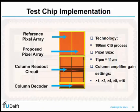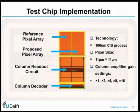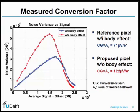In order to validate our proposed design, we implemented a test chip using a 180 nm CIS process. The pixel array is divided into two parts: a reference pixel array and the proposed pixel array. Each pixel size is 11 by 11 micrometers, and the column amplifier gain settings range from 1 to 16. The measured conversion factor shows that for the reference pixel with body effect, the conversion gain multiplied by the source follower gain is 71 microvolts per electron. For the proposed pixel without body effect, it is around 120 microvolts per electron, an increase of approximately 40% at the pixel level.